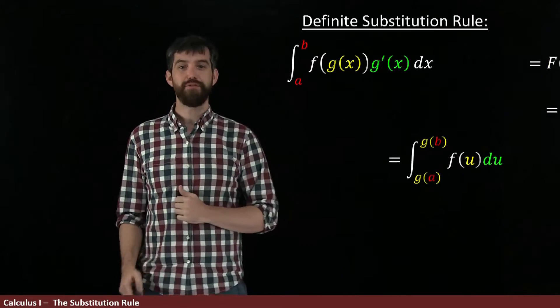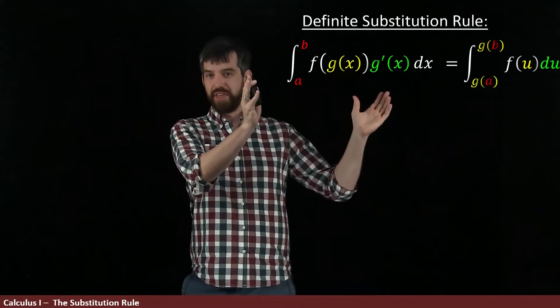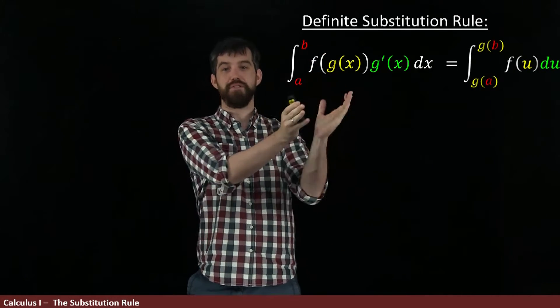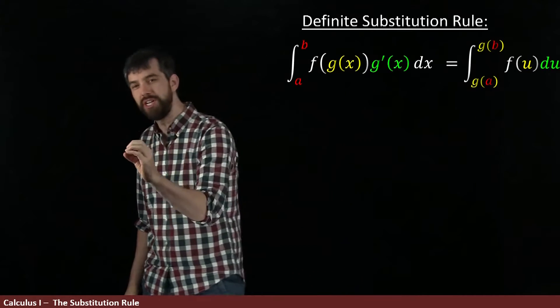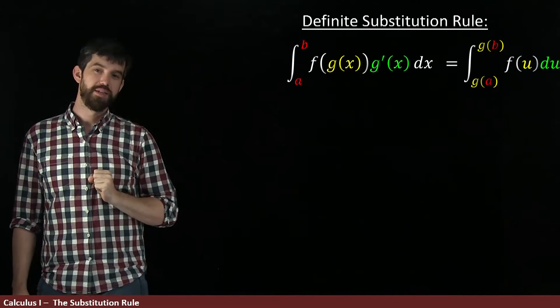So now we have this nice formula. Let's put it all together. We have that the definite integral from a to b of functions of this form are the integral from g of a to g of b of f of u du.